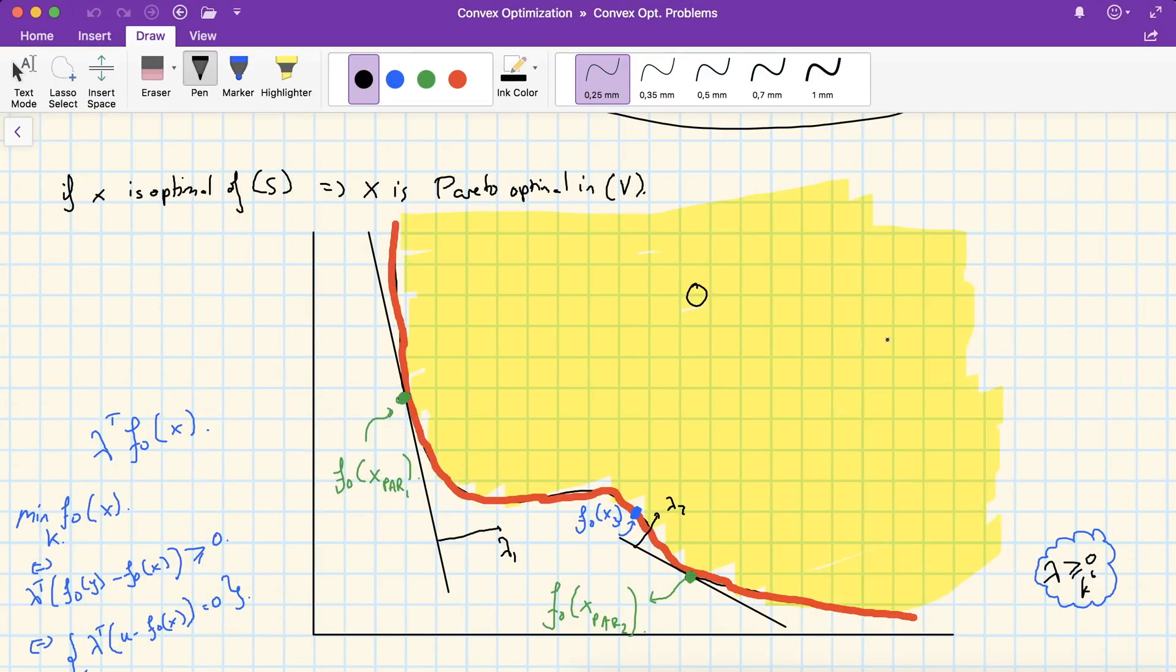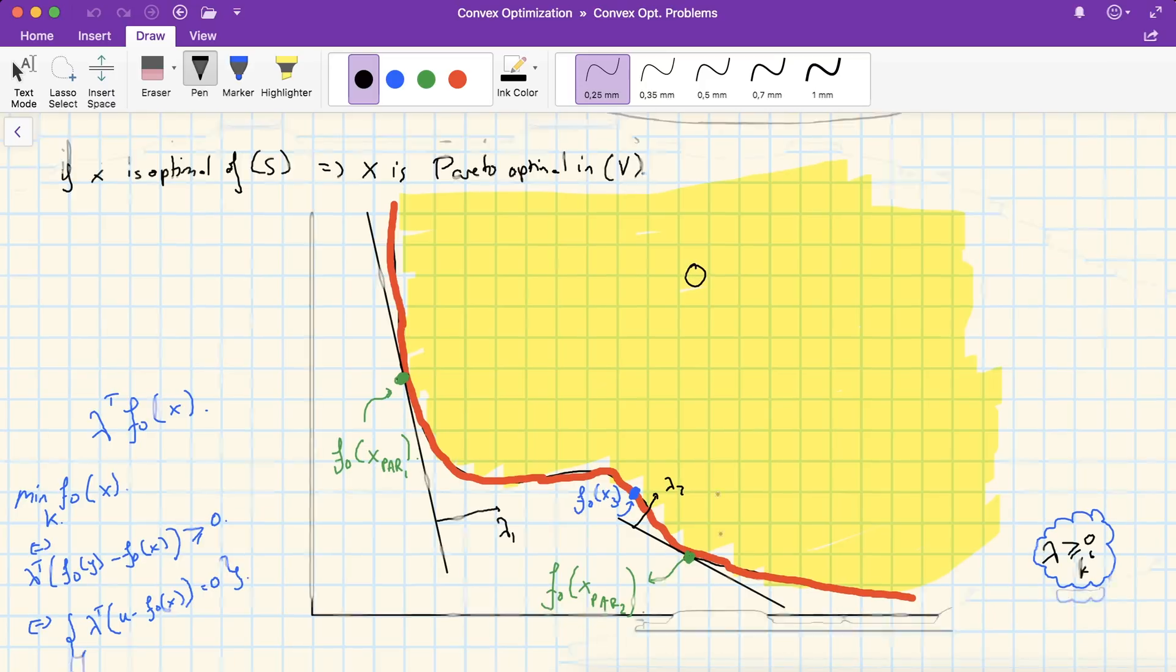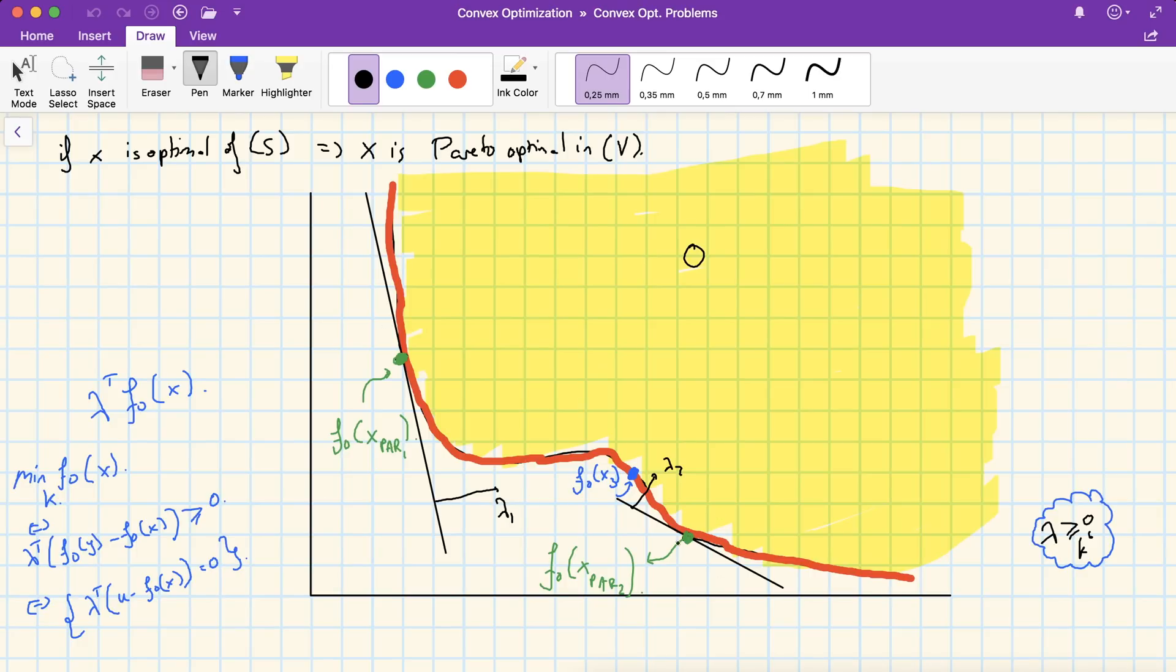If you recall from the previous lecture, the following boundary or frontier of Pareto optimal points, this is also referred to as the optimal trade-off curve, when we've got a bi-criterion problem. Now, when we've got more than two costs, then this is no longer a curve, as you see here, it's a surface.